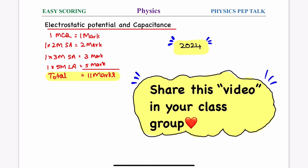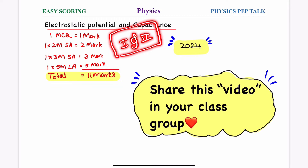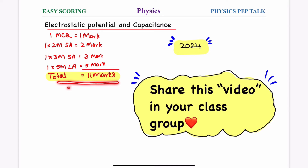You need to practice numericals from both the 1st and 2nd chapters for playing safe in your final exam. Total 11 marks each chapter.